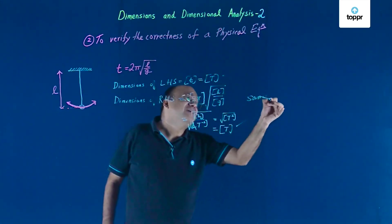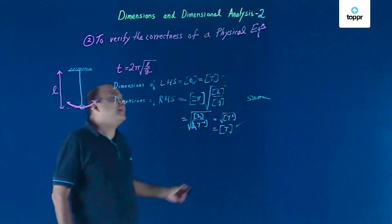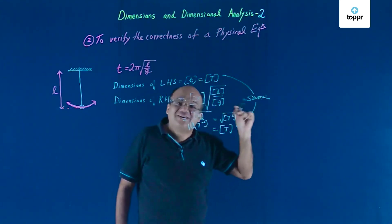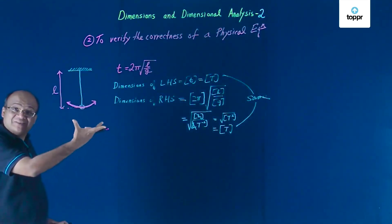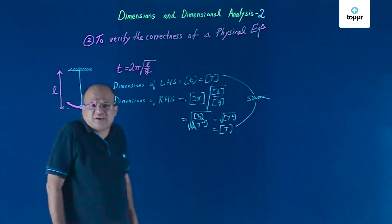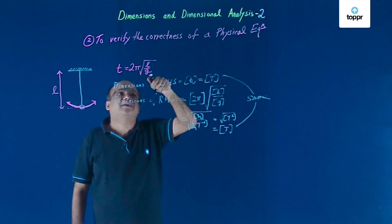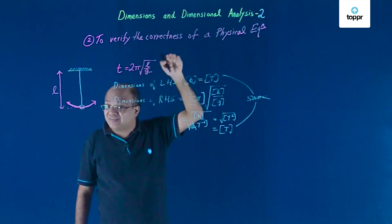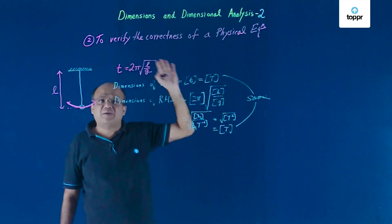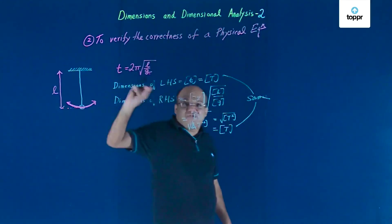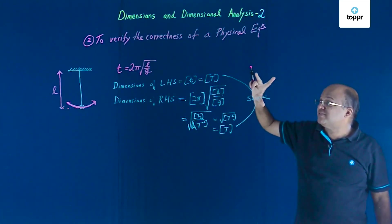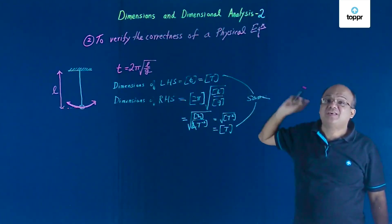So the dimension of the right hand side is also T, same as the left hand side. Therefore this equation is dimensionally consistent — the dimension of the left hand side is the same as the dimension of the right hand side, and the equation is correct. In the exam, if you forget and write G by L, you can check dimensionally to see which one is correct. For the correct equation, dimensions of left hand side and right hand side have to be the same.